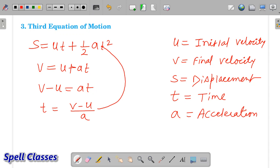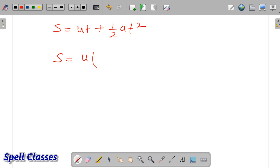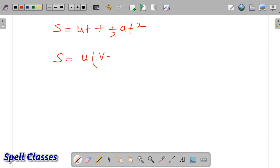And this value of t we need to put into the second equation. When we put t's value into the second equation, the third equation will be derived. So, s equals ut plus half a t square, we put the value of t, that is v minus u by a. We put this t value here.